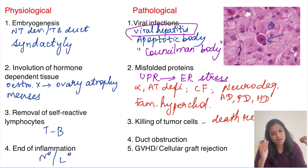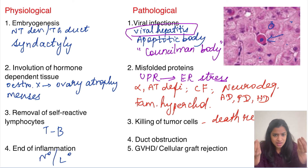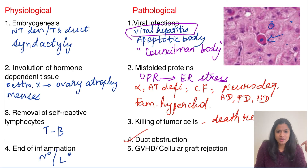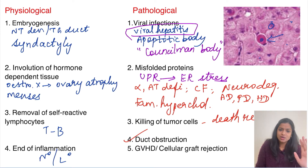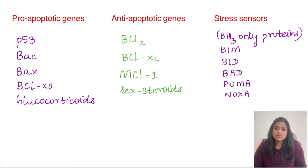The next example is duct obstruction. Whenever there is an obstruction, secretions accumulate and injure the proximal parenchyma. For example, salivary duct obstruction injures the salivary gland parenchyma, leading to cell death by apoptosis. Also, graft versus host disease and cellular graft rejection implicate apoptosis. Key points to remember: Councilman bodies as the apoptotic body, and misfolded proteins resulting in apoptosis.